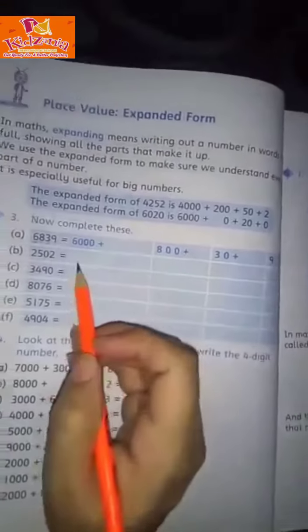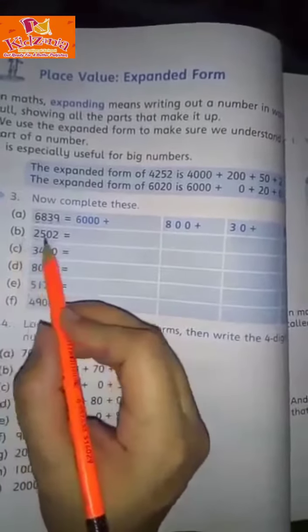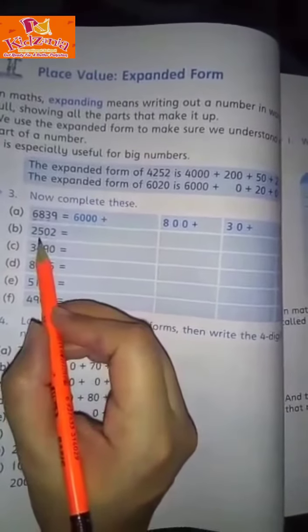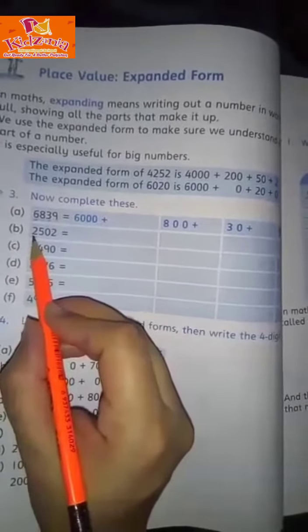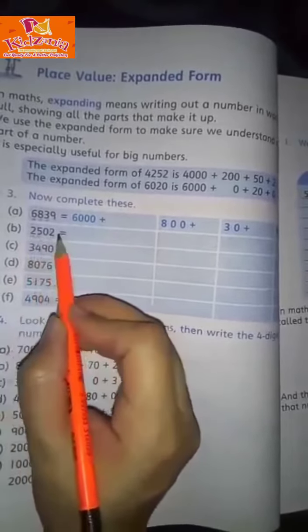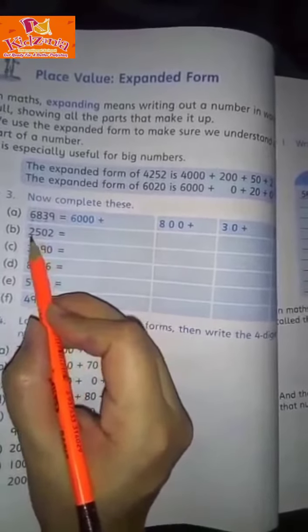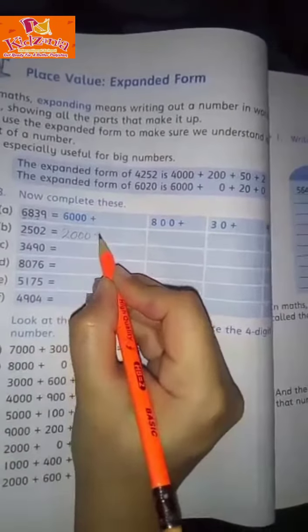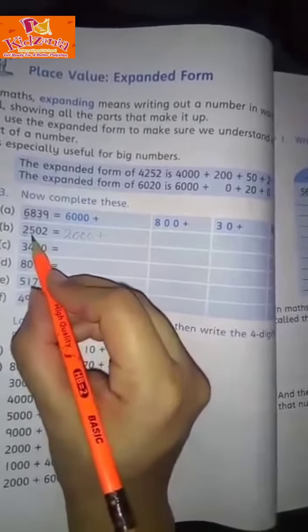Part b: 2,502. First we need to understand the value of 2. 2 is in the thousands place—ones, tens, hundreds, and thousands—so we write 2,000 plus. 5 is in the hundreds place—ones, tens, and hundreds—so we write 500 plus.